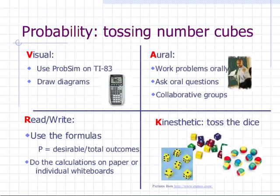There are also many ways to teach probability. Kinesthetic learners should actually toss dice or flip coins. Oral learners should discuss the results and work problems orally, perhaps in groups. Visual learners could use probability simulation programs such as the one provided on the TI-83 calculators online. Read-write learners will prefer sticking to formulas and theoretical rather than experimental probabilities.